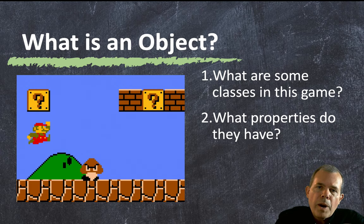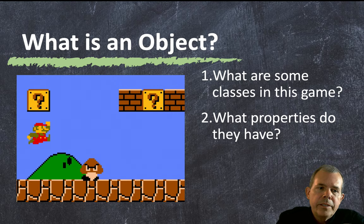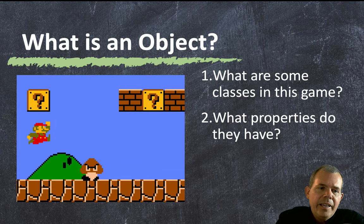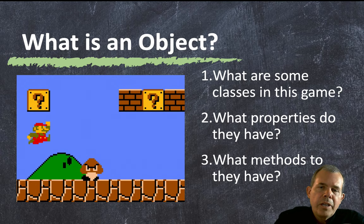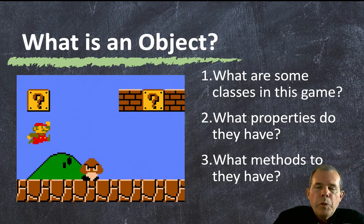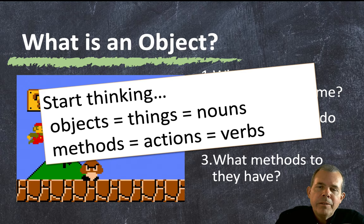What kind of properties would they have? Let's take Mario himself. Things that would describe him include his direction, his speed, his color — what kind of suit he's wearing (probably always red), his size, and what level he's on. For methods, what actions can Mario do? He can jump, run, switch directions, pick up coins, level up, and do a power up. When you think about objects in computer programming, objects relate to things or nouns, and methods are the actions — verbs. Every object has those two components: methods and properties.